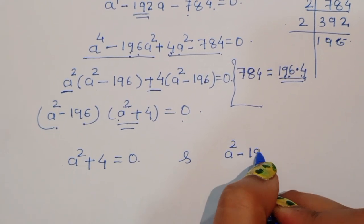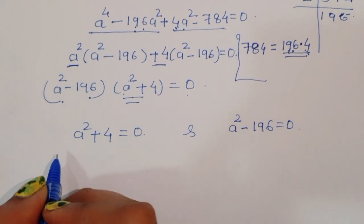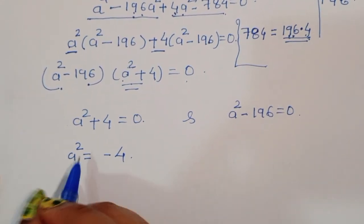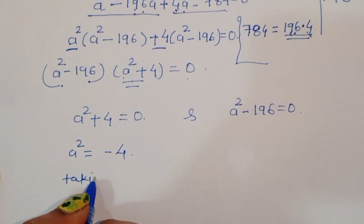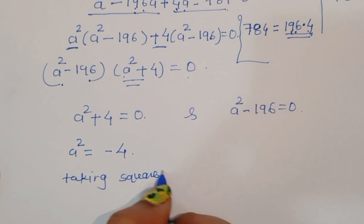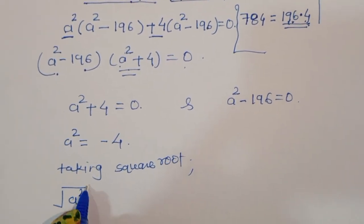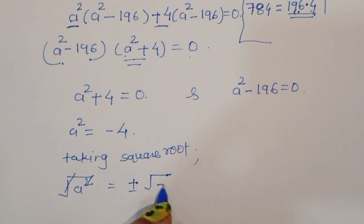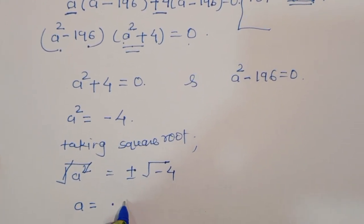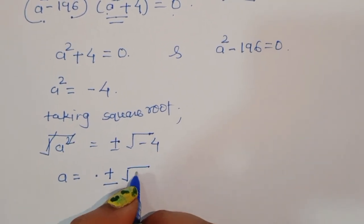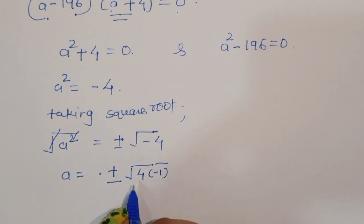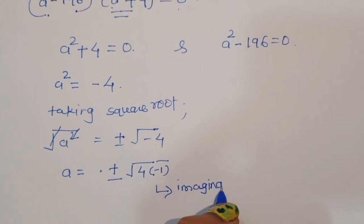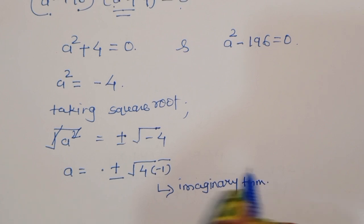From the factored form we have two cases. First, a squared plus 4 equals 0, so a squared equals minus 4. Taking square root, a equals plus or minus square root of minus 4, which involves imaginary numbers. So this solution is rejected.